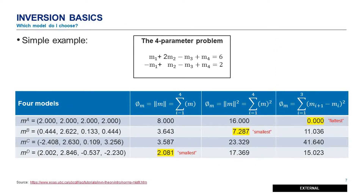I'm going to step back and cover what inversion is like with a very simple problem. We have four unknowns — M1, M2, M3, M4 — and we have two data: six and two. So we have an underdetermined system. We have to use those two data points to try and guess what M1, M2, M3, M4 are. If you don't have any other information, you can do whatever you want, so we need to come up with a way to think about how we're going to do this.